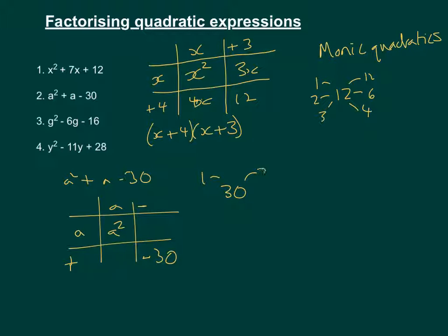So we've got 1 and 30. That's not going to work. 2 and 15 will not work either. 3 and 10. 10 minus 3 gives us 7. 4 doesn't work. 5 and 6.